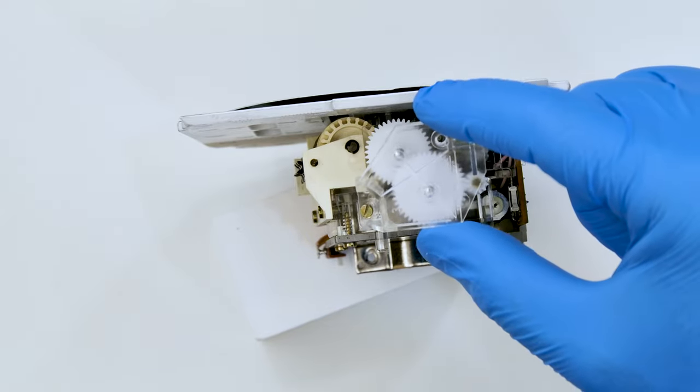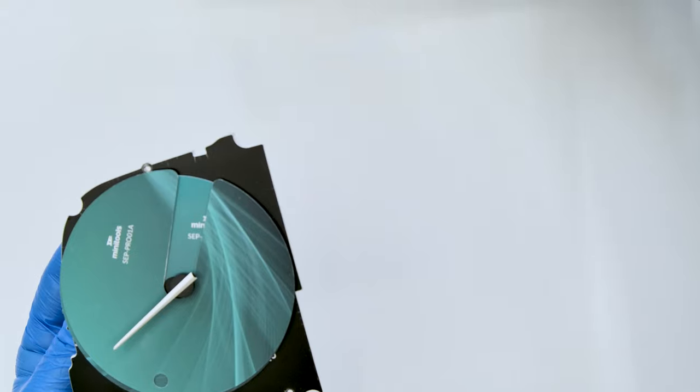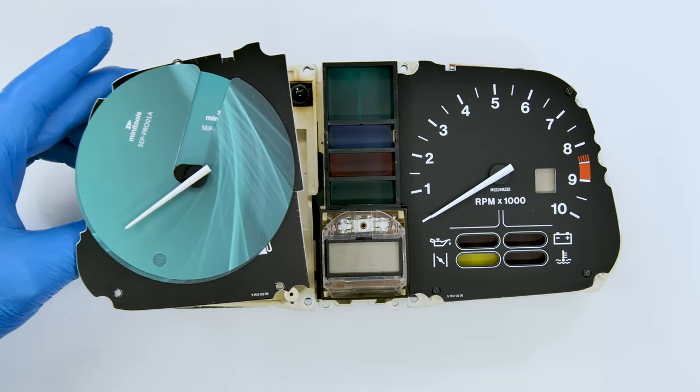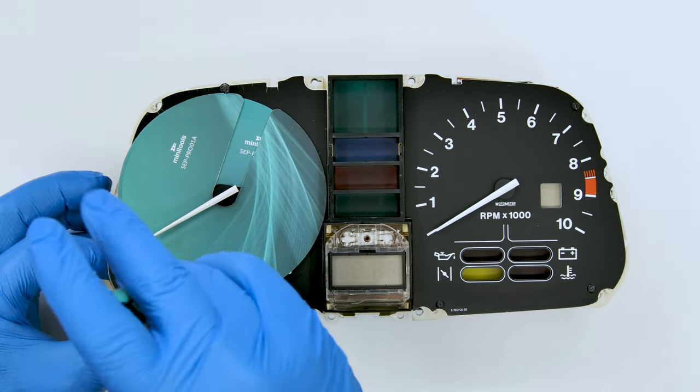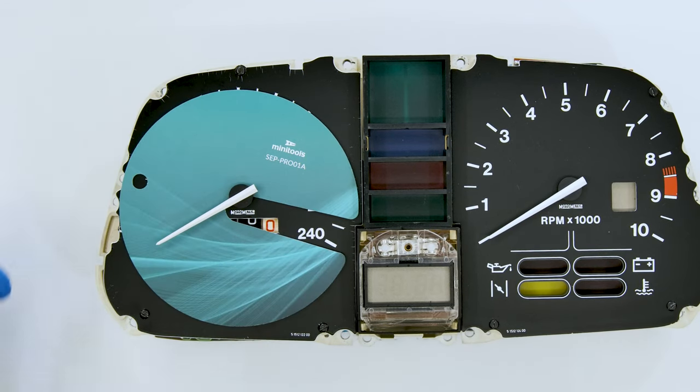Put back the clear plastic and secure it. Place the gauge into its housing. Tighten the screws and remove the protective discs.